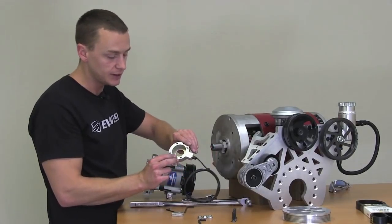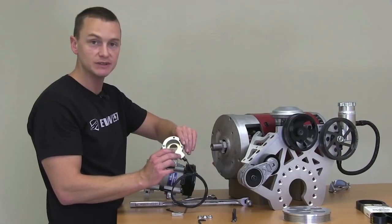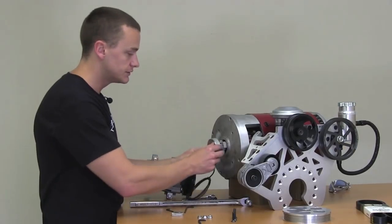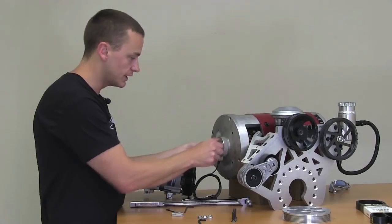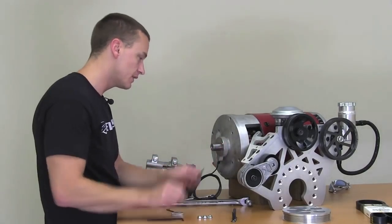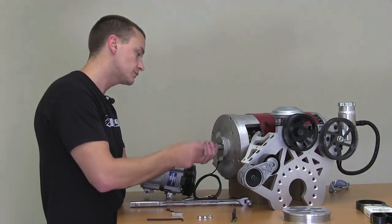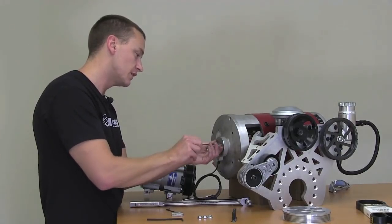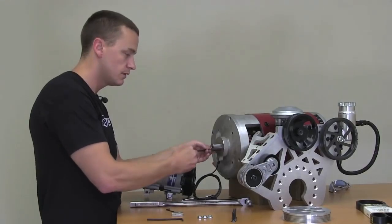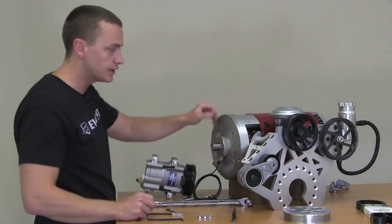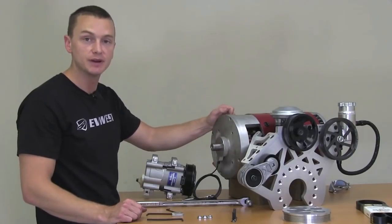This is the cover plate here. This has got our proximity sensor inside. This just bolts right up here to the front. Really nice, clean installation. We're going to go ahead and just snug these down. So from this point, we're pretty much ready to install the accessory plate on there.